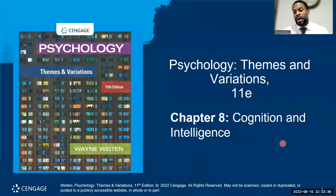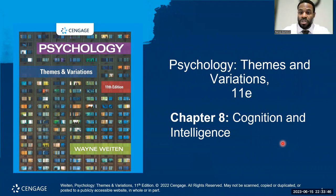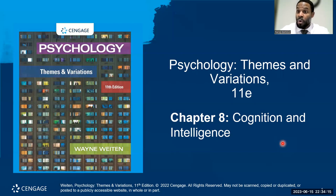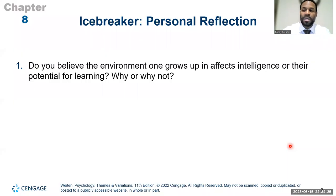Welcome back, scholars. This is Lecture 8, covering Chapter 8: Cognition and Intelligence. We'll split this chapter into two parts. The first part will discuss cognition, which covers thinking, problem solving, and decision making. The second part will cover intelligence — how we measure it and how we compare ourselves to others.